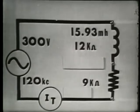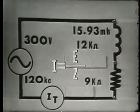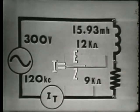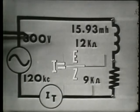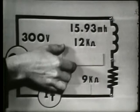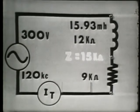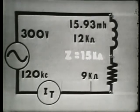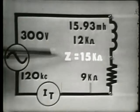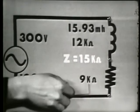By establishing the total impedance in our circuit, we can now determine the amount of current flowing and the voltage drops across the resistor and across the coil. Using Ohm's Law, current is equal to E, the voltage applied — 300 volts — divided by total impedance. The total impedance is the vector sum of R and XL, or as we found from our vectors, Z equals 15K ohms. Dividing 300 volts by 15K ohms gives us a current flow of 20 milliamps.